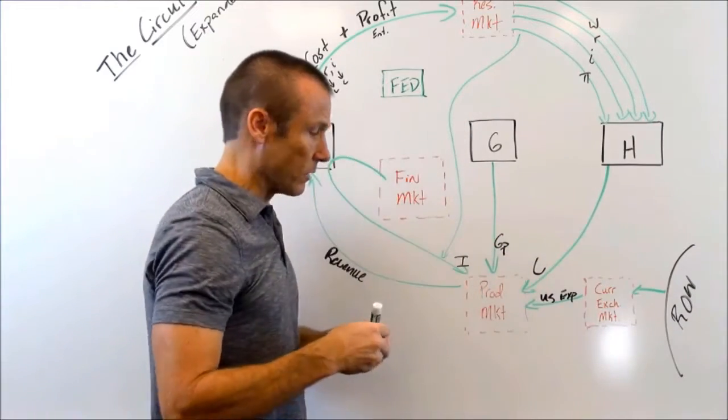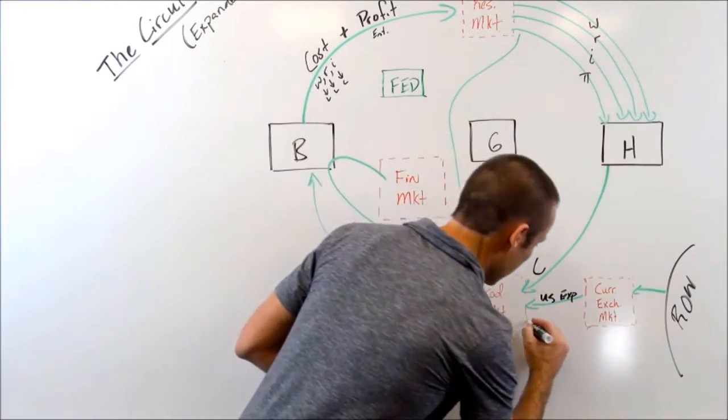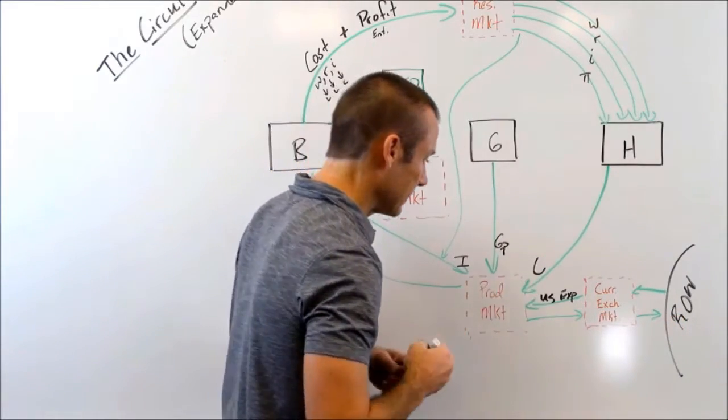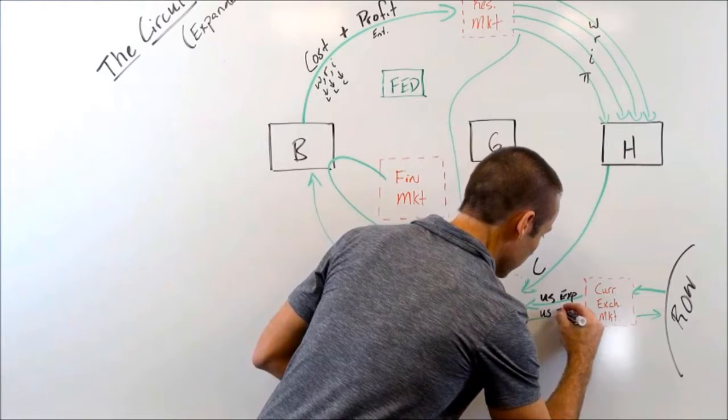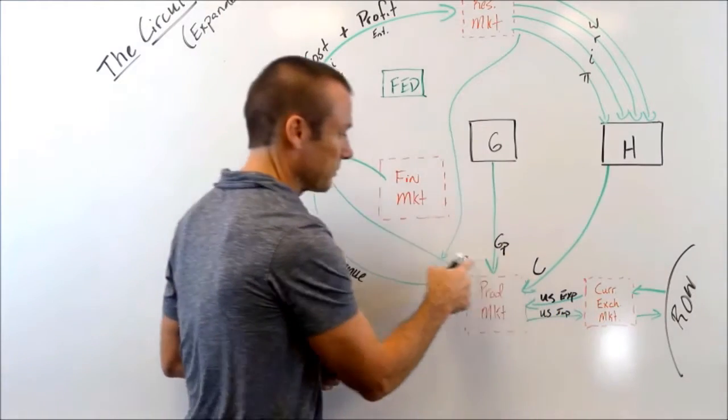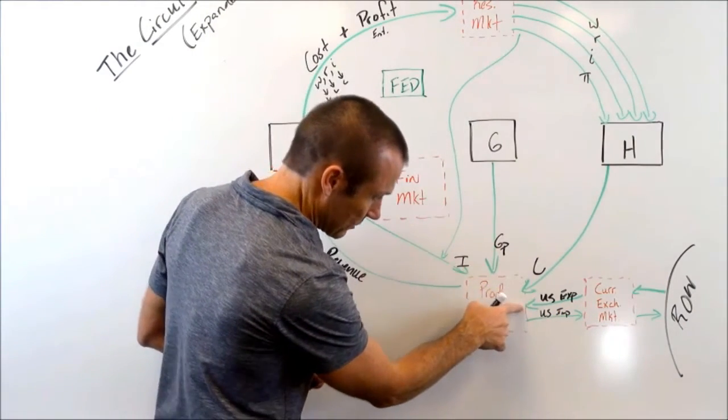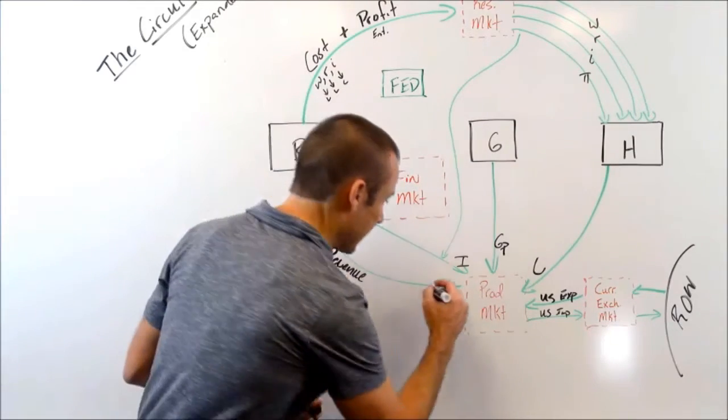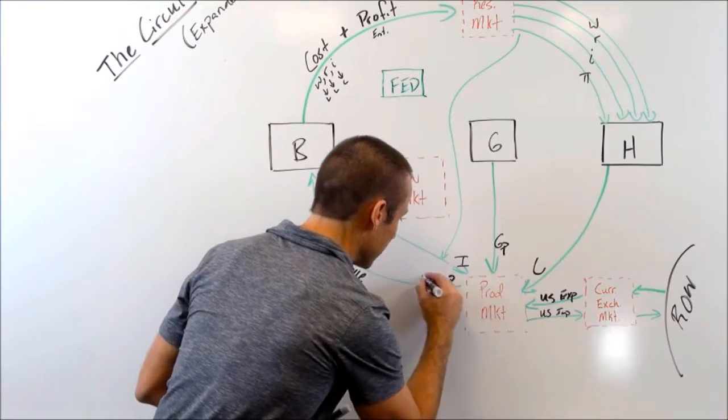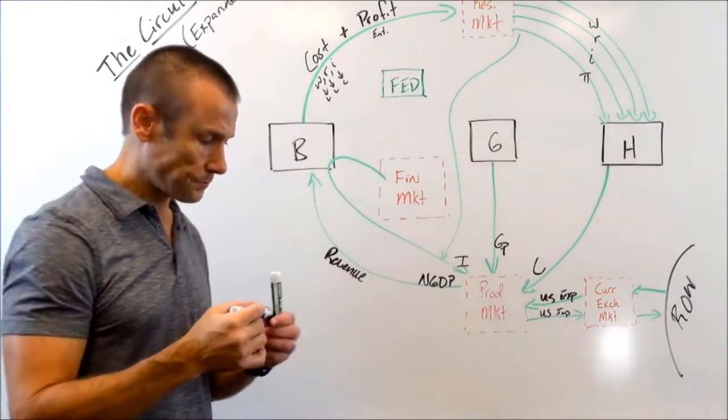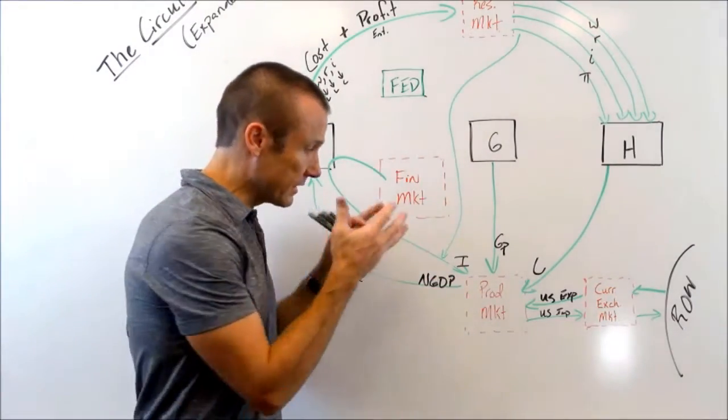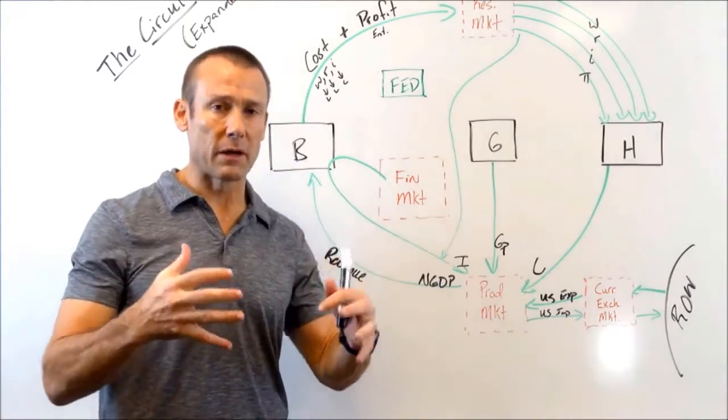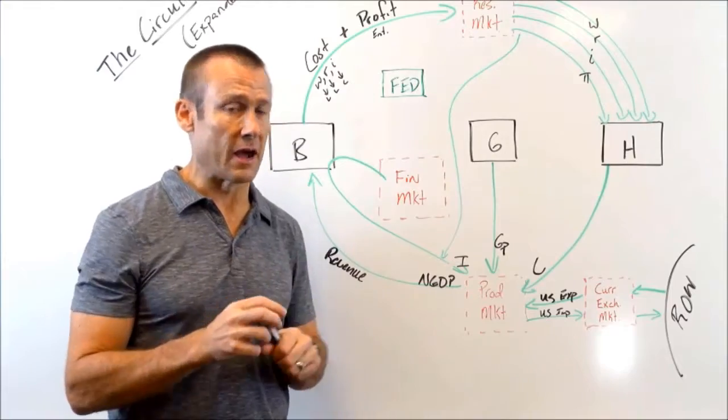And now here's money going out. That money going out is U.S. imports. If you take a look at this, you should be able to see C plus I plus G plus X, those arrows going in, minus the imports. That gives us GDP. Truly, it gives us nominal GDP. So there's the expenditure approach. As I go forward, I want to kind of just talk about our different actors individually to finish this thing out.